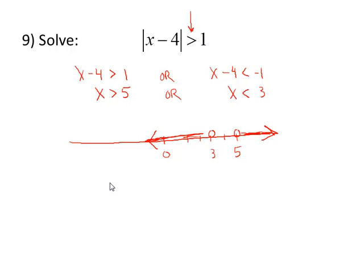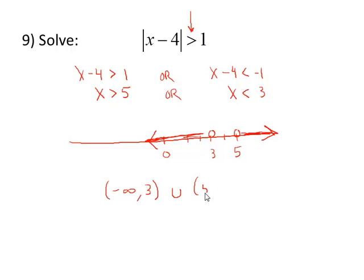In interval notation, the first interval begins — we write negative infinity comma 3. We use parentheses because 3 is not included. Then union, and the second interval is 5 comma infinity.